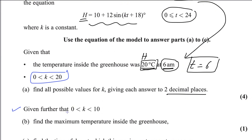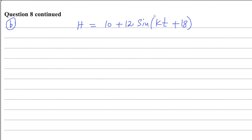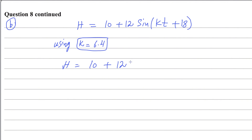For the next part, it is given that 0 < K < 10. From our two answers, K = 6.4 falls within this limit while K = 17.6 does not. So we use K = 6.4, giving the model H = 10 + 12sin(6.4T + 18). We need to find the maximum temperature inside the greenhouse.